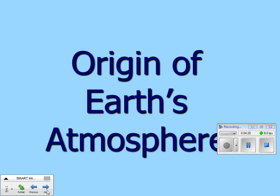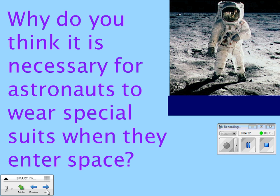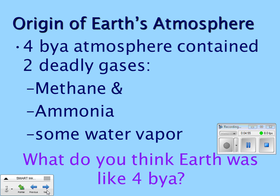Now we're going to talk about how we got our atmosphere. Why do you think it's necessary for astronauts to wear special suits when they enter space? Maybe it has to do with so he doesn't fly away, and more specifically, so he's got air to breathe. The origin of Earth's atmosphere: 4 billion years ago — BYA is billion years ago — the atmosphere contained two deadly gases, methane and ammonia, as well as some water vapor. Remember the Earth is only 4.5 billion years old.